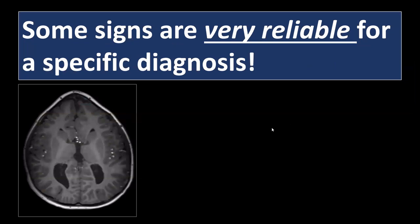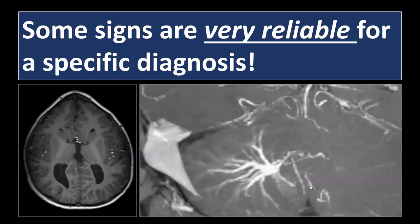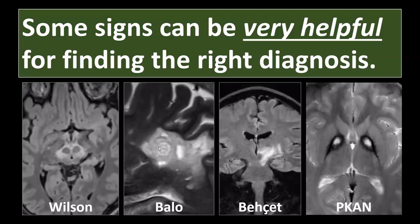Some signs can be very reliable for a specific diagnosis. If I see lateral ventricles shaped a certain way, I know I will find some form of dysgenesis of the corpus callosum on the sagittal image. If I see a particular appearance on a T1-weighted image with gadolinium, I know it is a developmental venous anomaly — because it looks like the caput medusae sign, resembling snakes on the head of Medusa.